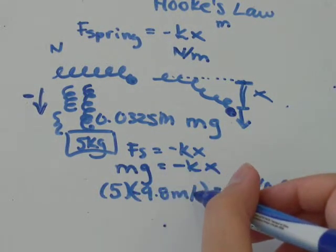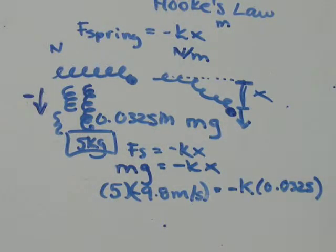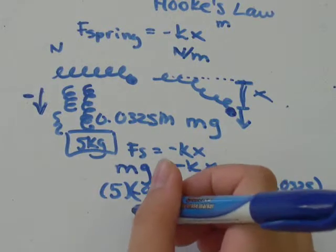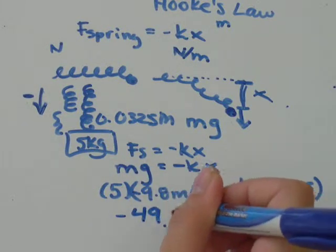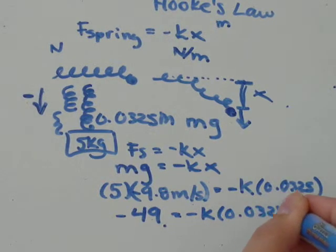So, 5 times negative 9.8 meters per second. 5 times 9.8, I get that to equal negative 49, equals negative k times 0.0325.